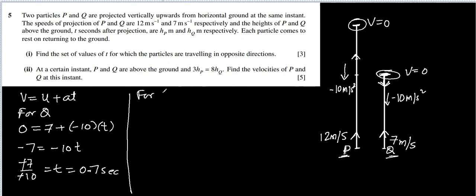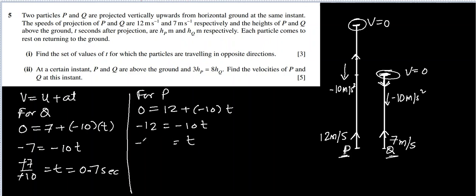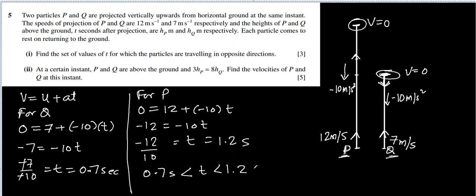Now for P: V = 0, U = 12, acceleration = −10, so 0 = 12 − 10T, giving T = 1.2 seconds. Therefore, in the time interval from 0.7 seconds to 1.2 seconds, they were traveling in opposite directions. Note that I have not written equal signs at the endpoints — at 0.7 seconds Q was stationary, not moving in the opposite direction, and similarly at 1.2 seconds. So the answer is 0.7 < T < 1.2.